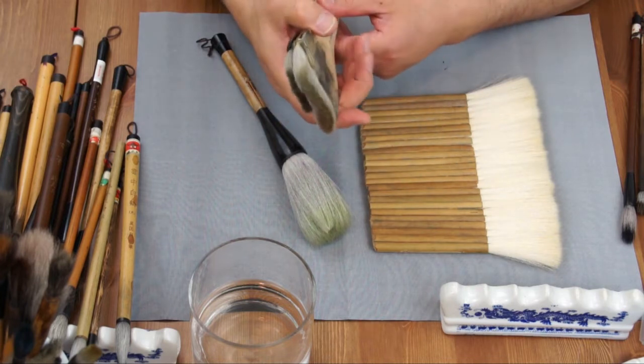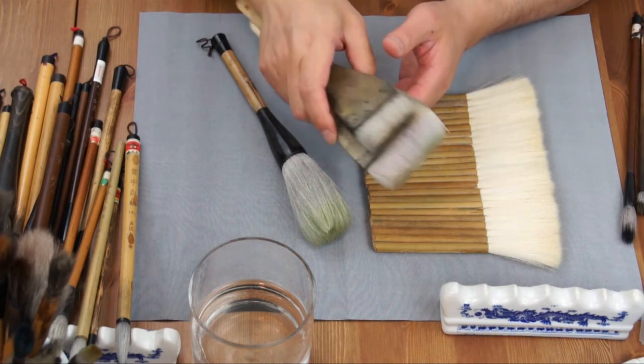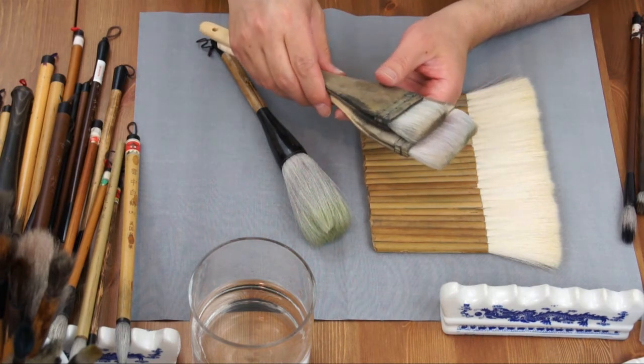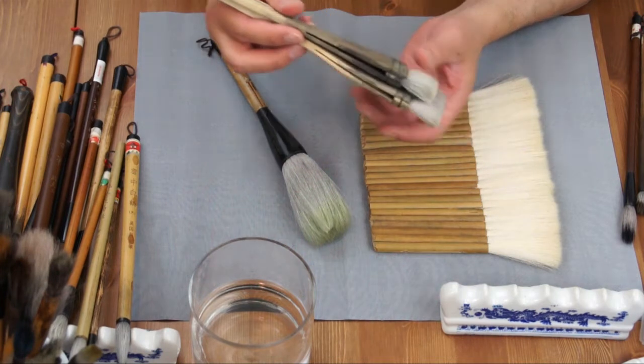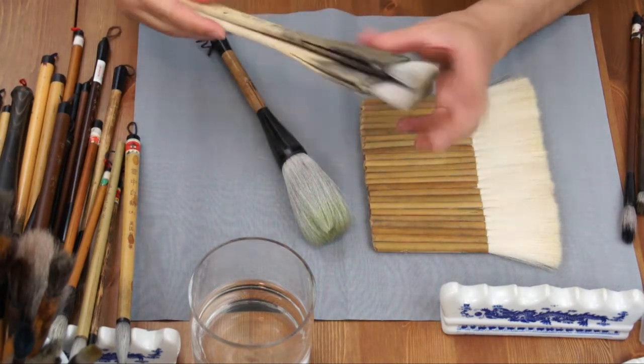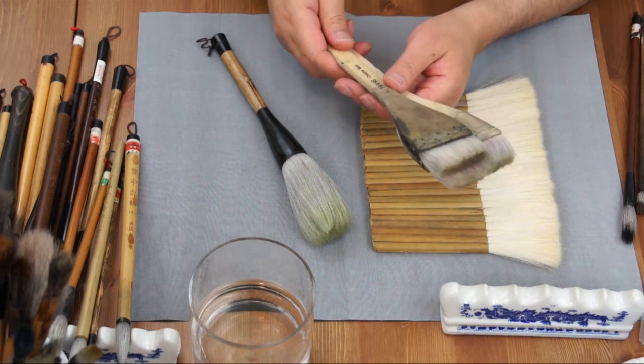You can use it for direct painting, like a bamboo I did in one YouTube demo. You can use it, as the name suggests, for background washes. It's called a flat hair cut brush.